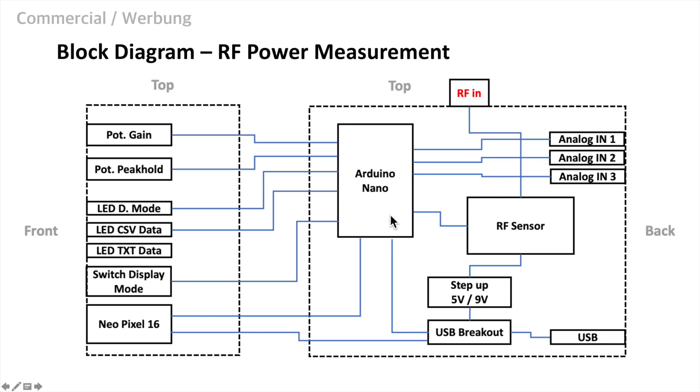On the backside we find the banana connectors for the voltage measurement. They are connected via resistor voltage dividers to three other analog inputs. At the bottom we find the USB connector for power. It supplies the power for the device and we use it as a serial interface to the PC. On the left side which represents the cover of our case we find the potentiometers for the gain and the peak hold control, the three LEDs that indicate the locking and the display modes, the switch to change the display mode and the Neo pixel display.